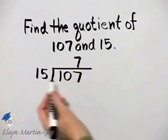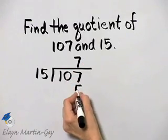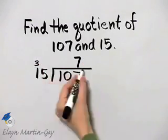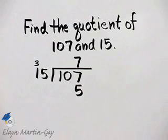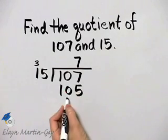7 times 15, well 7 times 5 is 35. Carry the 3. 7 times 1 is 7 plus 3 is 10. 105.